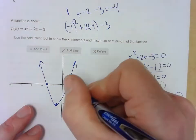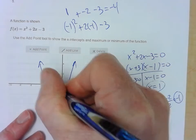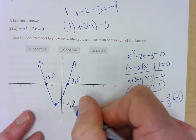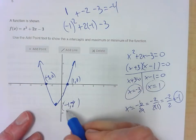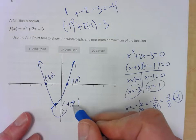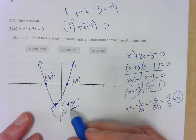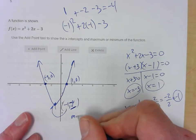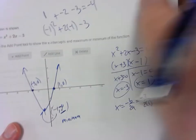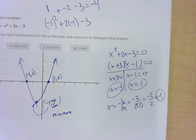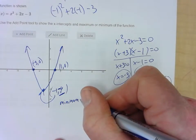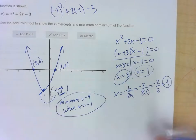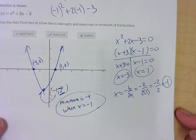The x-intercepts are at (1, 0) and (negative 3, 0). The vertex is at (negative 1, negative 4). The minimum value is the y value, so the minimum of the function is negative 4 when x is negative 1. If the parabola were upside down, it would be a maximum.